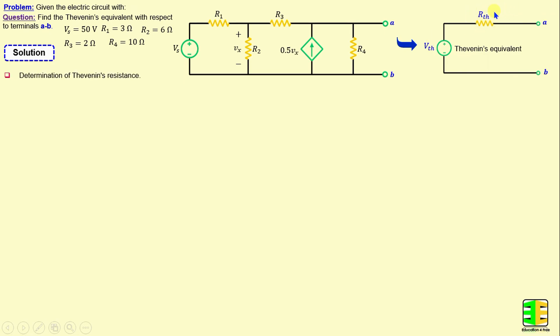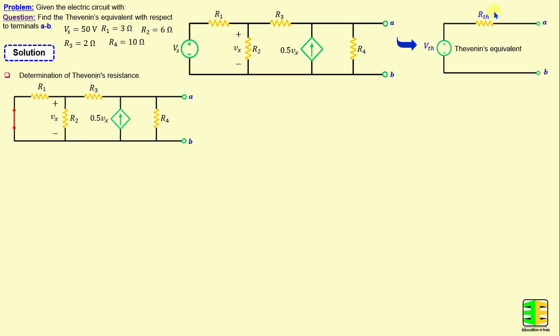I will start first with the determination of Thevenin's resistance. This step can be done by removing all independent sources in the circuit, which means the voltage source will be replaced by a short circuit and the current sources will be replaced by an open circuit. But we see the presence of the dependent source, so the idea is to excite the network with a voltage V0 connected between terminals A and B, and we can set V0 equal to 1V to make the calculation easy.